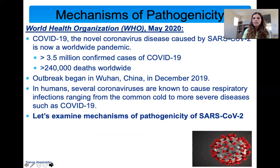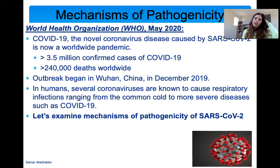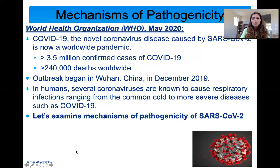Just to recap: COVID-19 is the novel coronavirus caused by SARS-CoV-2, which is a world pandemic. As of May 2020, there were over 3.5 million confirmed cases and over 200,000 deaths worldwide. The outbreak began in China at the end of 2019 with severe respiratory infections. As a reminder, coronaviruses are a large family of viruses, but SARS-CoV-2 is one new member. We're still learning a lot about it, which is why we don't have a vaccine or drugs yet. We're going to focus on why this virus is pathogenic — and why it's actually more virulent compared to other coronaviruses.